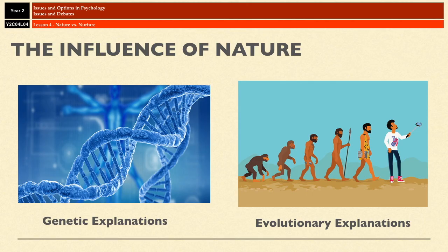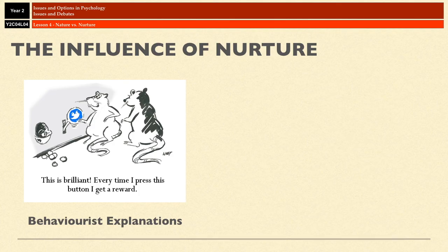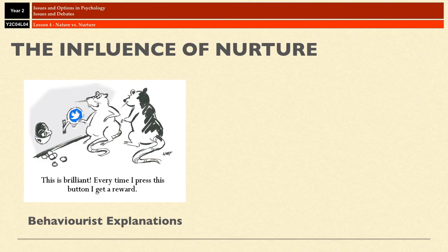On the other side, a couple of examples of nurture influences. Behaviourist explanations are all about the environment — behaviourists assume that all behaviour can be explained in terms of experience, as a product of classical and operant conditioning. In psychology, attachment can be explained this way: the primary caregiver becomes associated with the pleasure of receiving food through classical conditioning, and when a baby is hungry they experience discomfort that is relieved when fed — that's operant conditioning at work.